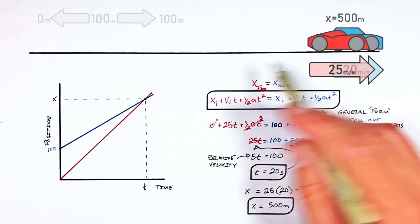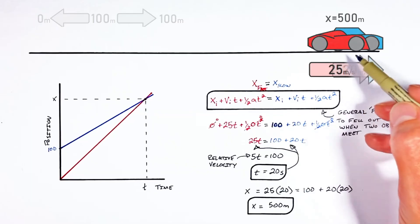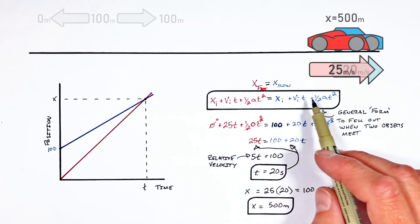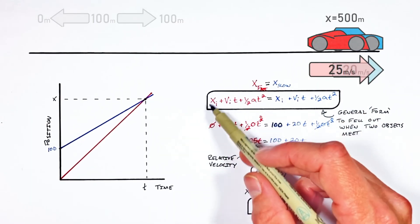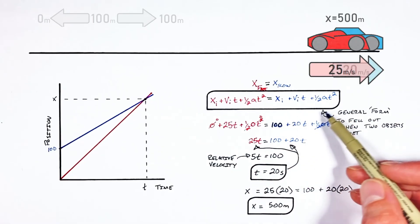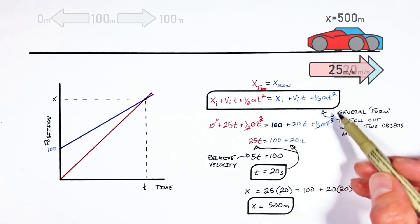So remember, anytime you have two objects which are going to meet at some position, you can set their position functions equal to each other. And then really just fill out that form of position functions in order to make it specific to the situation.